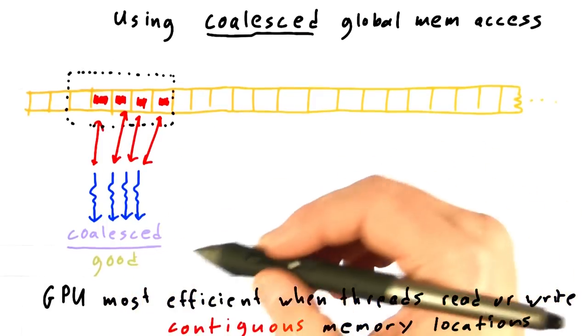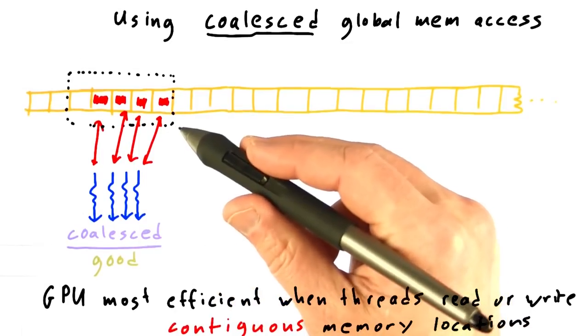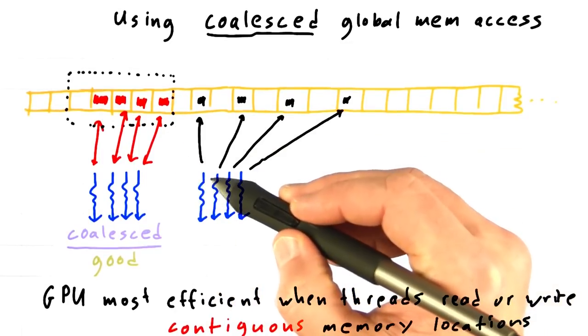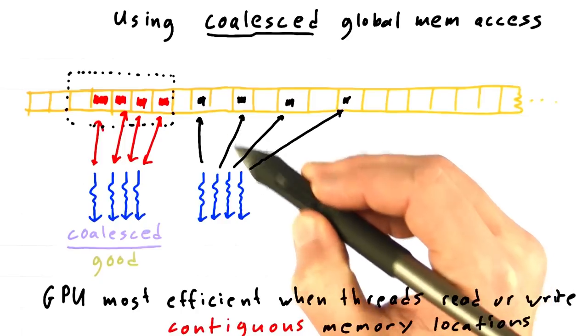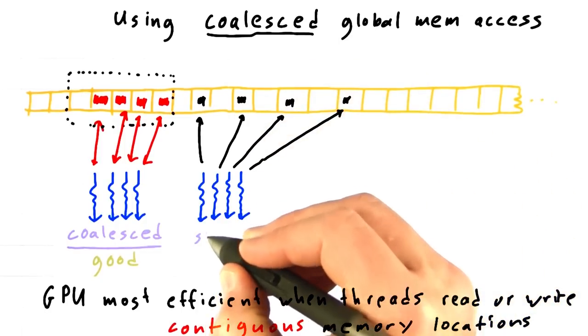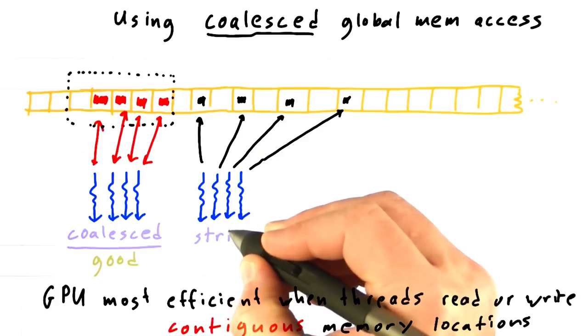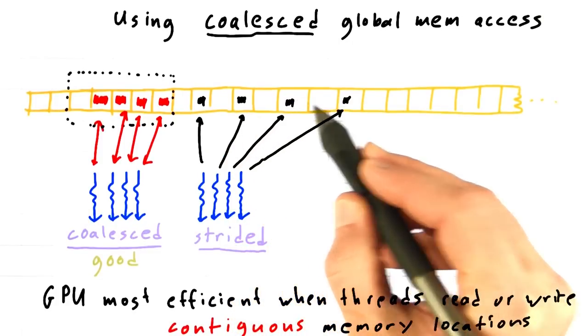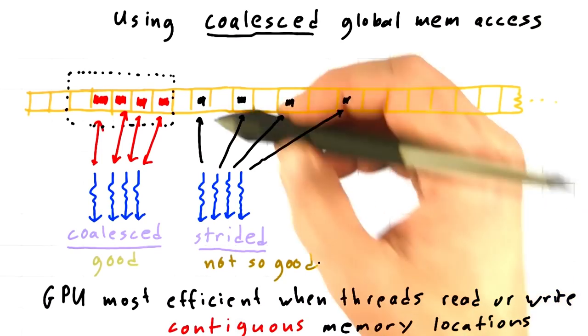You'll get very high performance on a memory read or memory write in this setting. In this example, every adjacent thread is accessing every other memory location. And so this is not coalesced. We would call this strided because there's a stride between every thread's access. And this pattern is not so good.